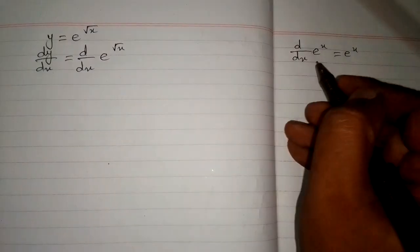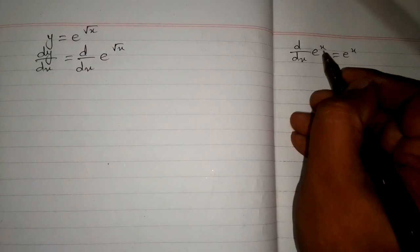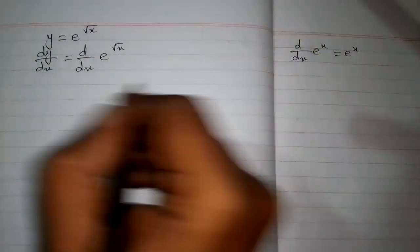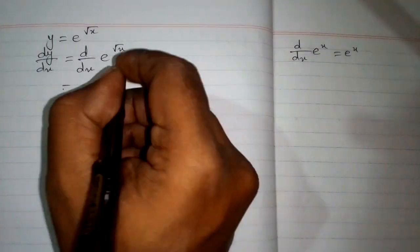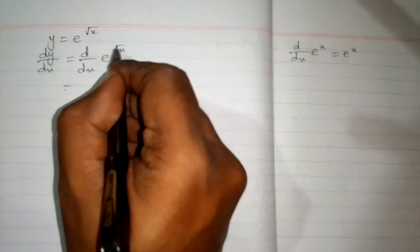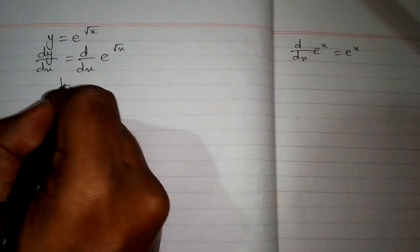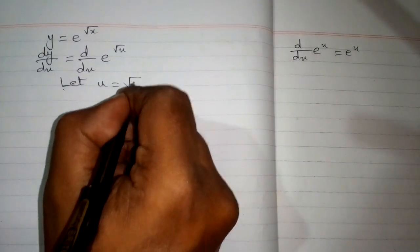We can apply this formula, but we must have the exponent and the variable the same. We can see that these two things are not the same — here we have square root of x and here we have x. So let u = square root of x.